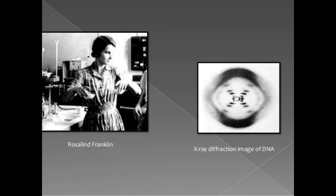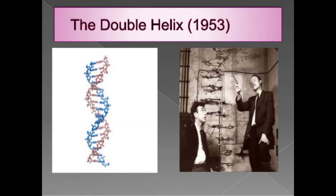Rosalind Franklin discovered the first X-ray diffraction image of DNA, which was shown as a figure. Based on this X-ray image, Watson and Crick discovered the double helical structure of DNA. In 1953, both scientists — Watson and Crick — proposed one model of the double helical structure of DNA.